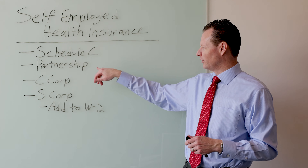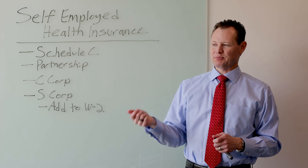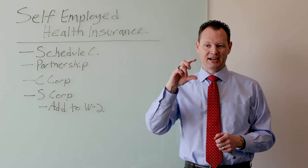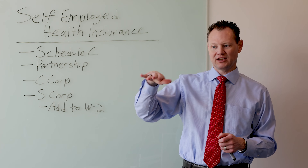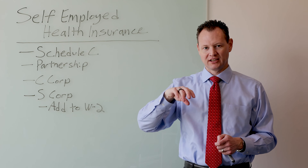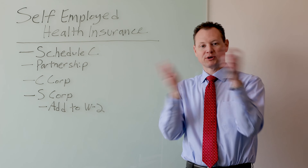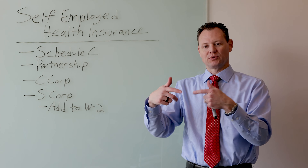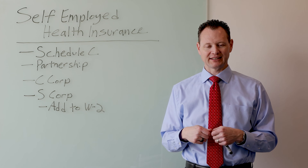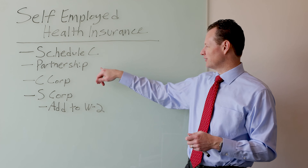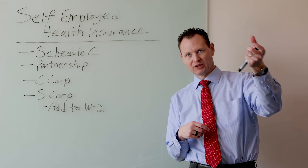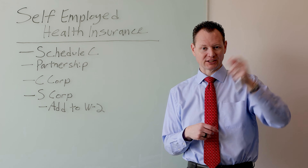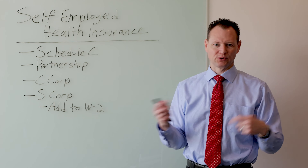Sometimes partnerships will pay those premiums for you. If that happens, they'll usually add that to your K-1 as a guaranteed payment. It shows as income on the K-1, and it also shows as a special deduction for health insurance being paid. When you get to your personal return and input that K-1, it picks up the income from the K-1 and also picks up the deduction for that health insurance. You'd get the full deduction because the business income from the K-1 is reduced — they deduct those health insurance premiums at the partnership level and pass that through on your K-1.